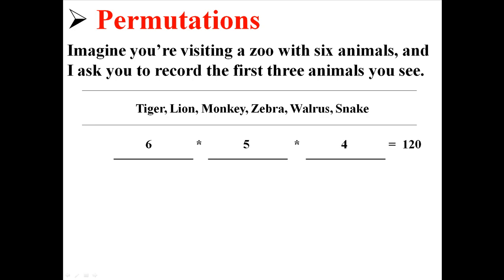If we multiply all of these we would find that there are 120 permutations, 120 ways these three different animals can be combined.